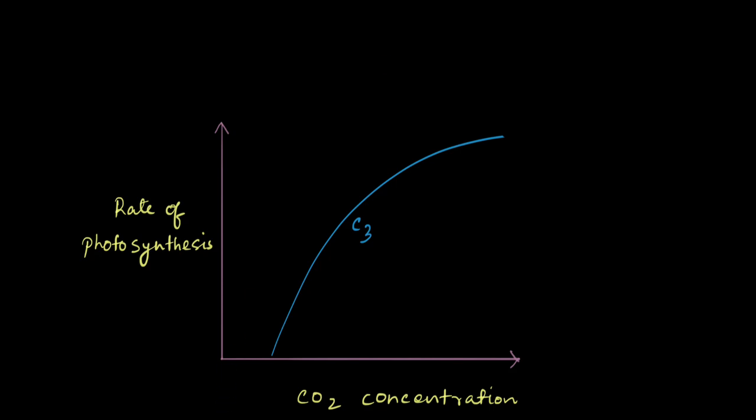So what does it mean for our graph? It means that at low CO2 concentrations themselves, the rate of photosynthesis starts rising steeply in the beginning itself. And then it levels off, but much earlier than C3 plants.